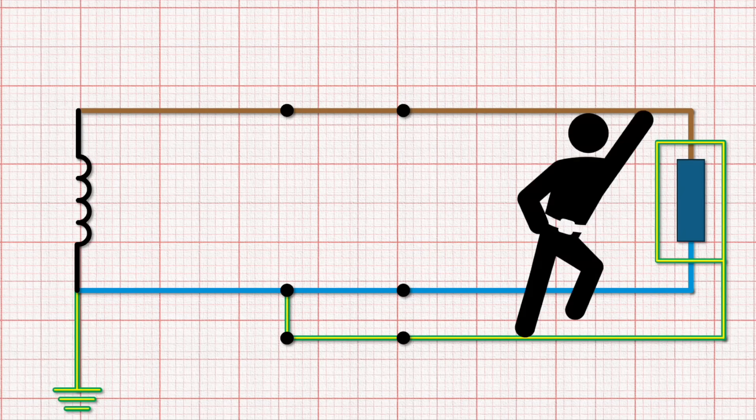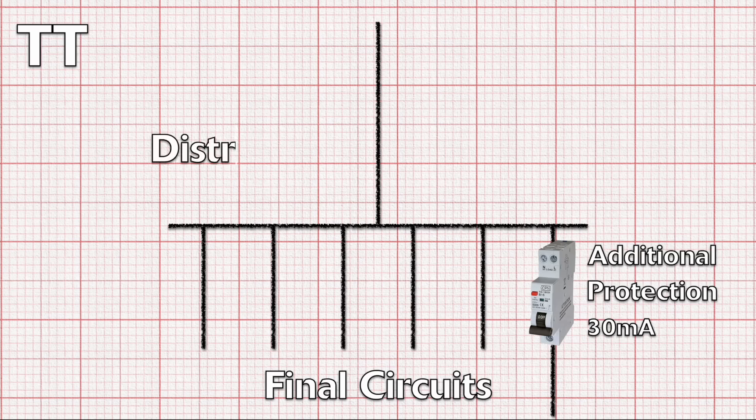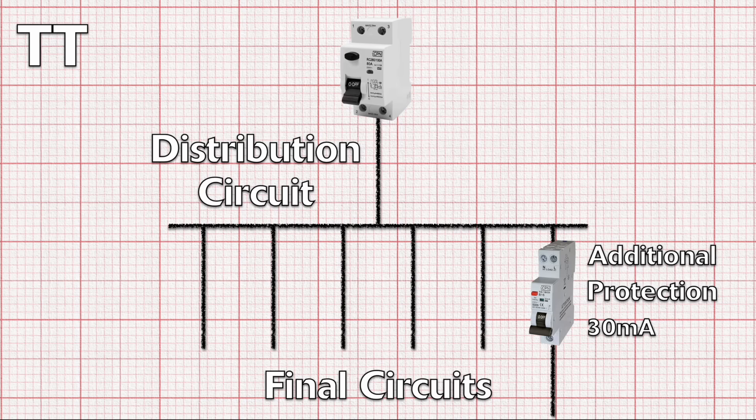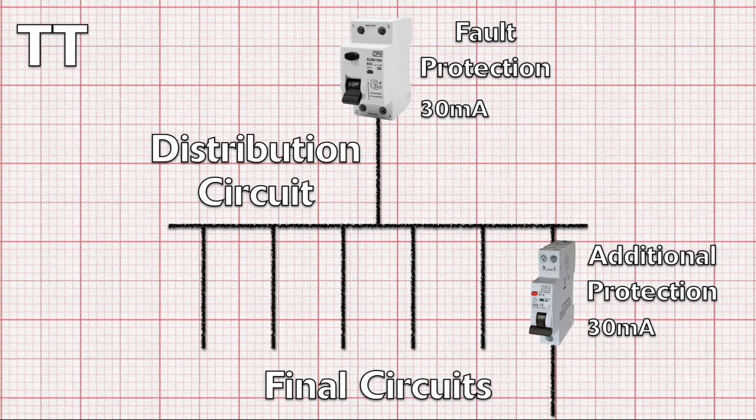But what about if this final circuit is connected from a sub-main or a distribution circuit supplying lots of other circuits? A problem arises here because we need to use an RCD to provide the sub-main with fault protection. If this RCD is rated at 30 milliamps then we run into an issue with selectivity.